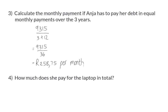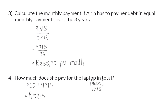Question four: how much does she pay for the laptop in total? Remember that at the beginning Anya paid a deposit of 900 rand, and then she also paid another 9,315 rand, which means the total amount she paid for the laptop is 10,215 rand — for a laptop which originally cost 9,000 rand. The interest of 1,215 rand makes up the difference to reach that total of 10,215 rand.